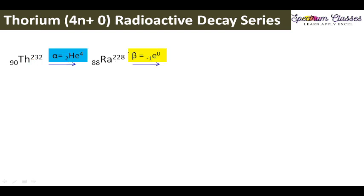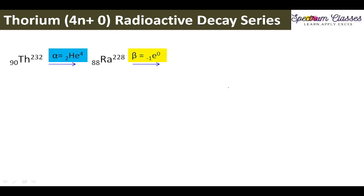From this radium we are going to remove one beta particle. If we remove one beta particle, it means 88 minus (−1), which gives us 89. In the case of mass number, nothing has to be removed, so the next element has atomic number 89 and mass number 228 — this is Actinium-228. Moving further, we remove one beta particle again and in the same manner we return to thorium.